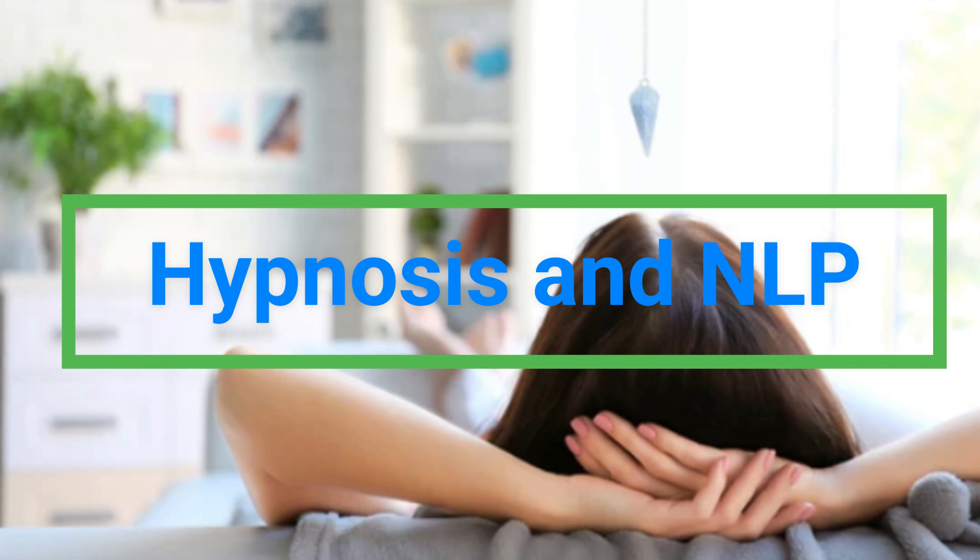The RAS serves as a gatekeeper, determining which information is allowed into our conscious awareness based on familiarity and relevance. When new information is introduced, the RAS may initially reject it if it doesn't align with pre-existing patterns or beliefs. However, with proper training and an open mindset, we can teach our RAS to accept and integrate new concepts. The RAS is often referred to as the ignition system of the brain, helping regulate our level of consciousness from waking up in the morning to maintaining focus throughout the day. The RAS is also linked to brain wave activity, with alpha and beta waves originating from this system, influencing our thoughts, emotions, and behaviors.